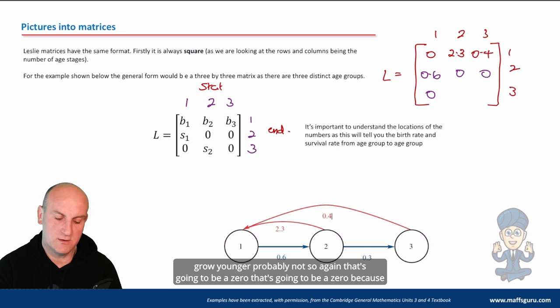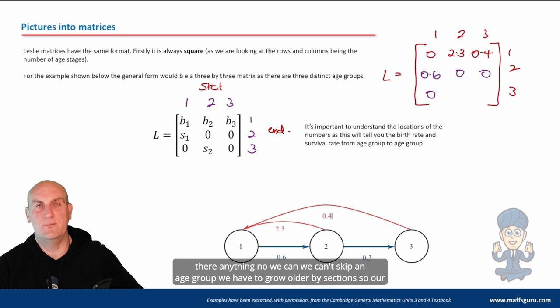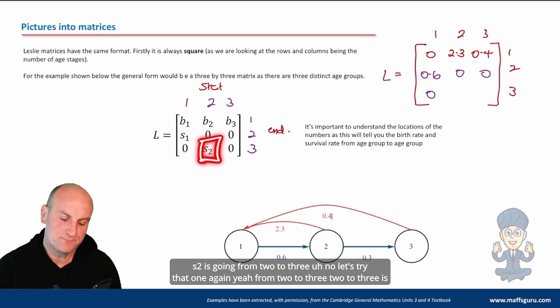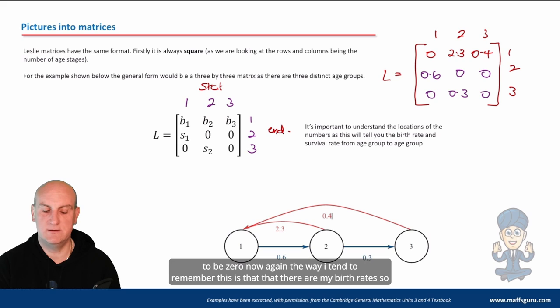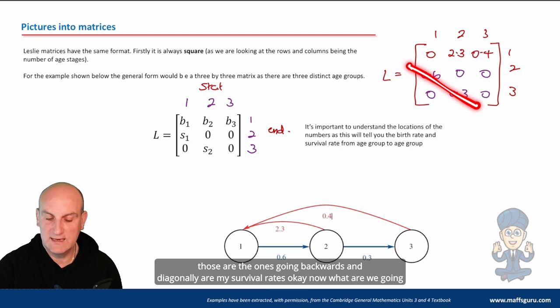That's going to be a 0 because there's no one going straight from 1 to 3. So if we look here, 1 to 3. Is there anything? No. We can't skip an age group. We have to grow older by sections. So our S2 is going from 2 to 3. From 2 to 3. 2 to 3 is that one there. That's 0.3. So that's also going to be 0. Now, the way I tend to remember this is that those are my birth rates. So those are the ones going backwards. And diagonally are my survival rates.